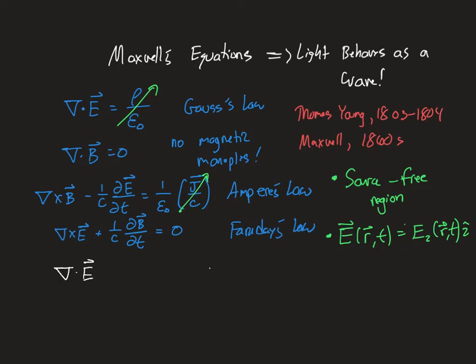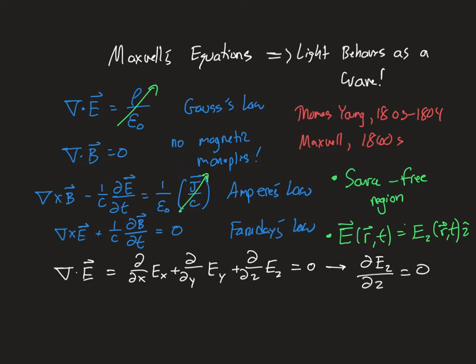The divergence in Cartesian coordinates is simply the dot product of the del operator with the electric field, giving the x derivative of Ex, y derivative of Ey, and z derivative of Ez. That equals zero — that's what Gauss's law in free space tells us. This tells us that the derivative of E in the z direction is going to be zero, because we've already specified we don't have any components in either x or y. So we now know that ∂Ez/∂z equals zero.